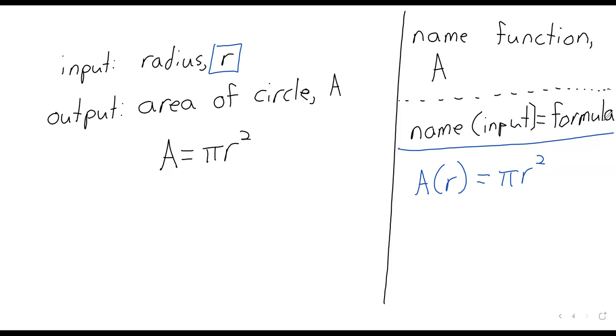When you're reading this aloud, so when I'm talking to you, or when you're asking questions to me, we don't say a parentheses r. That could get a little annoying. We say a of r, or f of x, or g of y, or our name of variable.